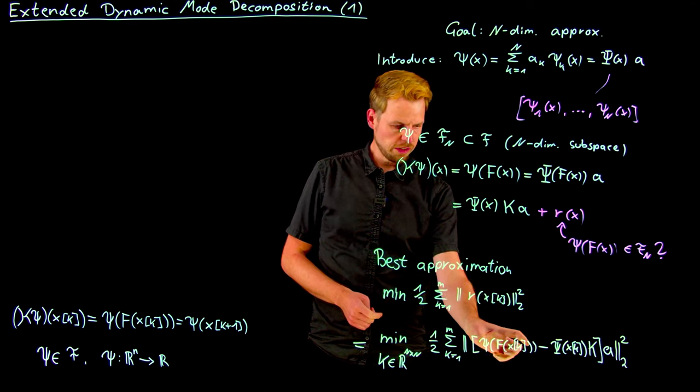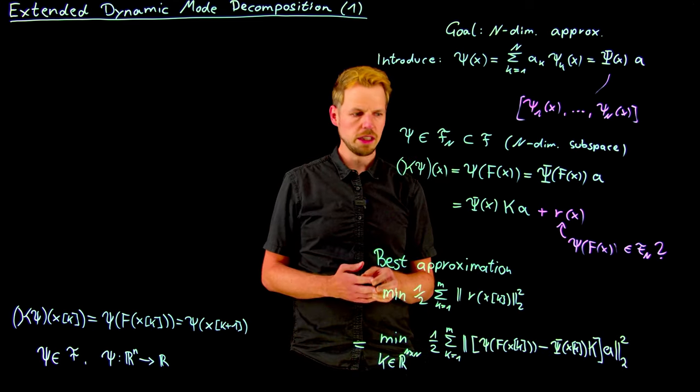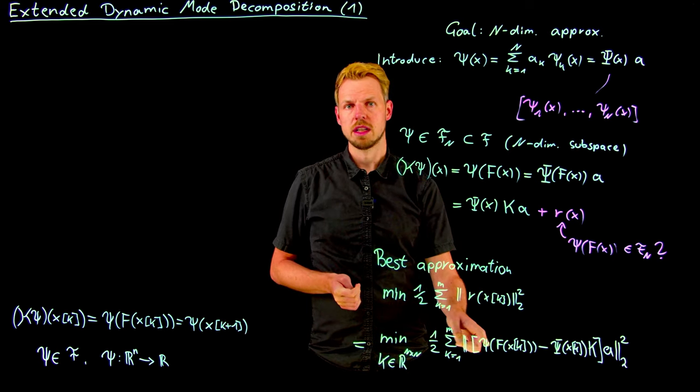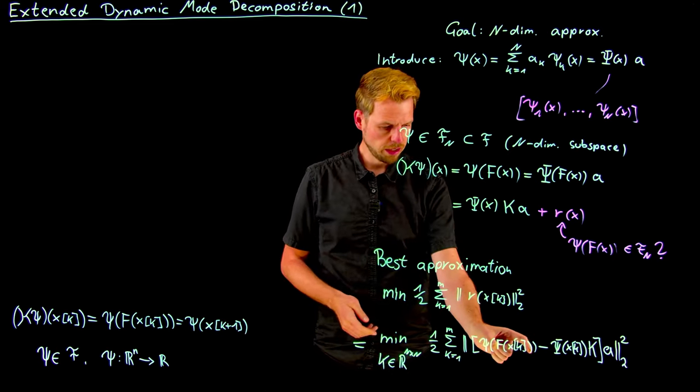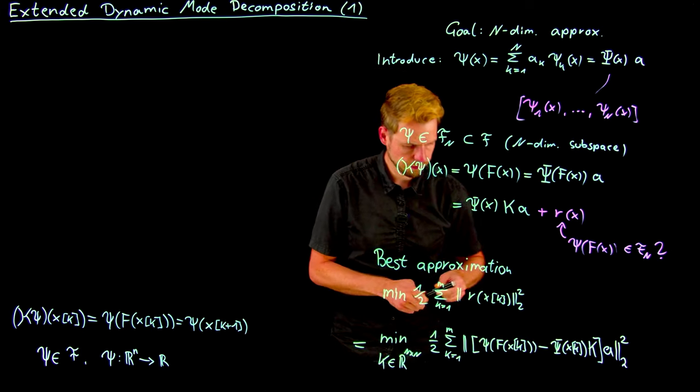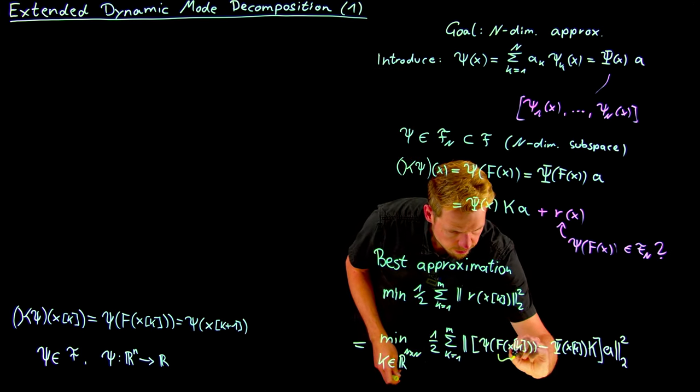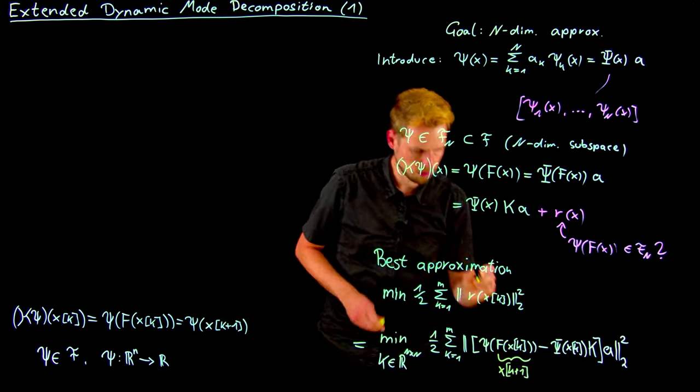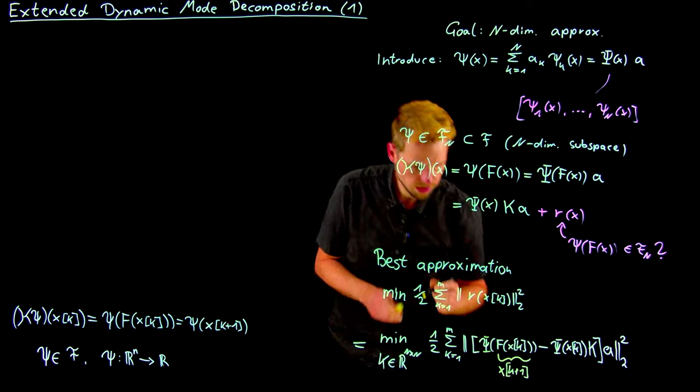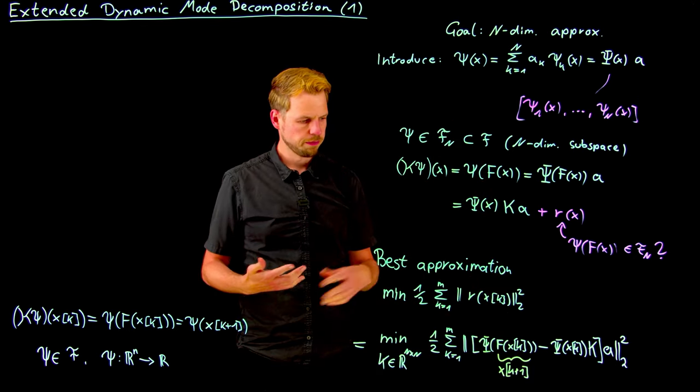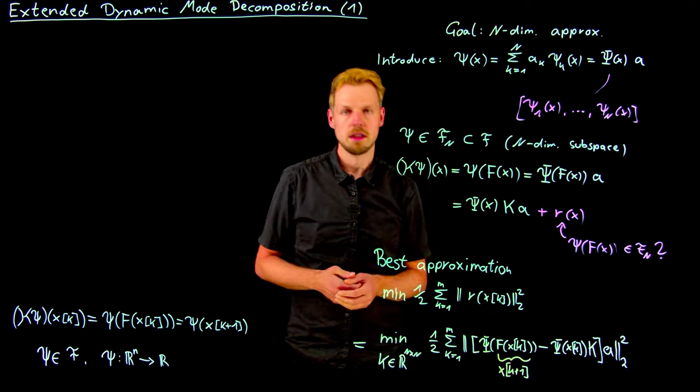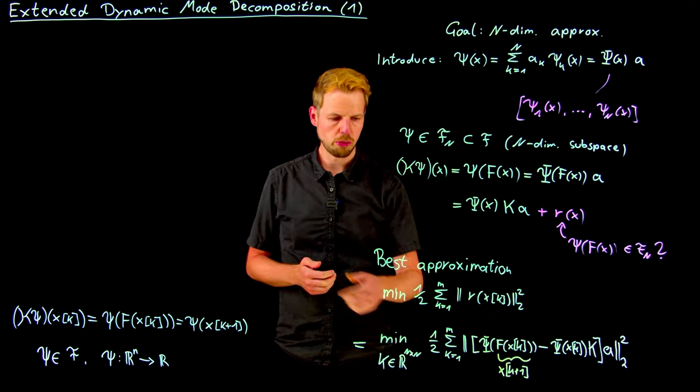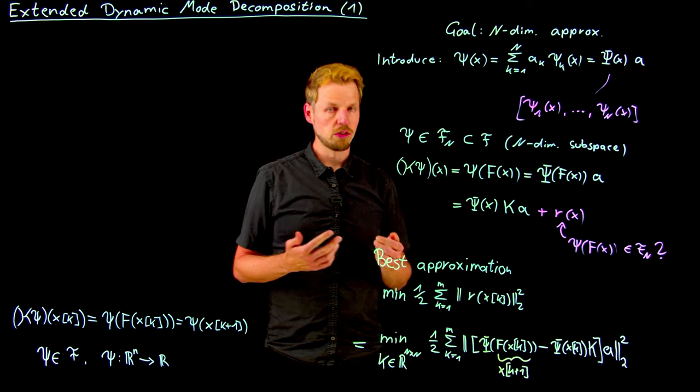What you see here is a standard linear regression formulation. If you have psi of f of x_k minus psi of x_k, what we need is consecutive time steps and we do not need to know the f. If we have time step x and x_k+1, we can simply replace this by x_k+1. So this has to be our basis function vector again. In fact, this is a really nice standard linear regression problem, and we can approximate the Koopman operator from data.